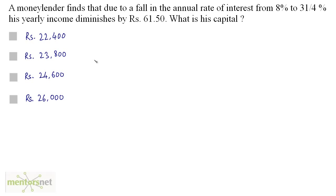A money lender finds that due to a fall in the annual rate of interest from 8% to 31 by 4%, his yearly income diminishes by 61.5. What is his capital?